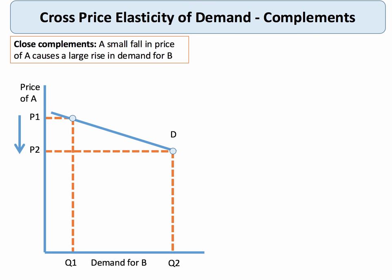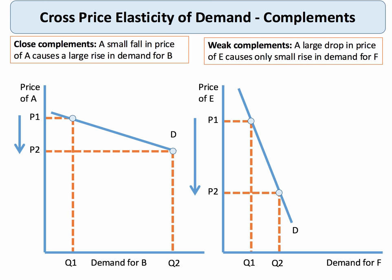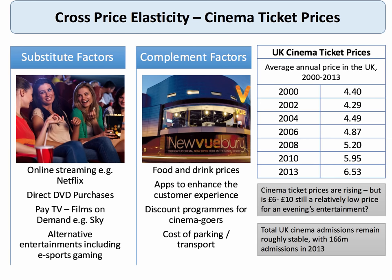For complements, the relationship is negative. If the price of good A falls a little from P1 to P2 and we see a substantial increase in demand for good B, that suggests the two goods are highly complementary. Whereas if a big fall in the price of good E leads to only a relatively small increase in demand for good F, that illustrates a weak complementary relationship.